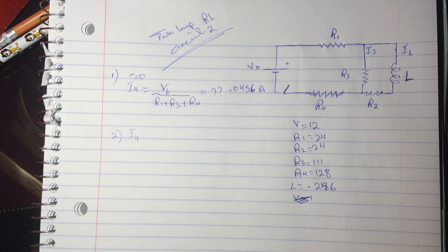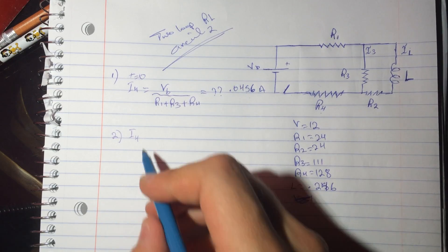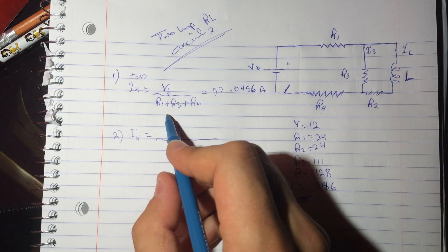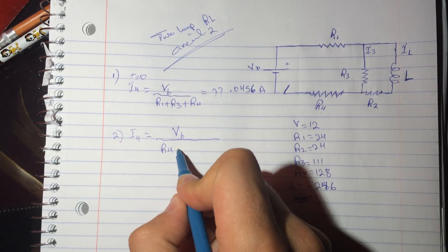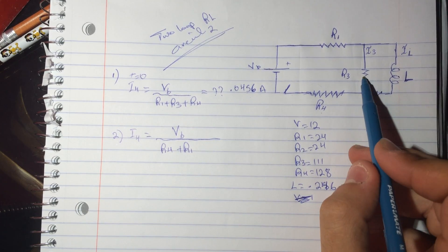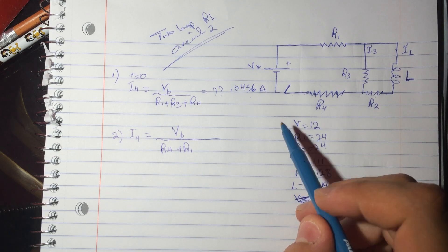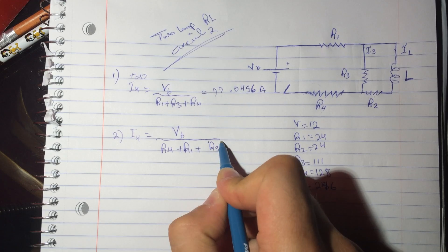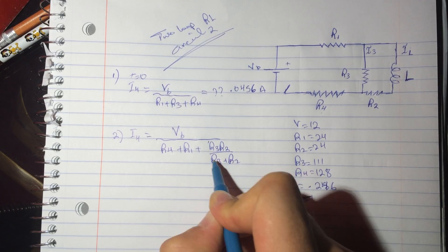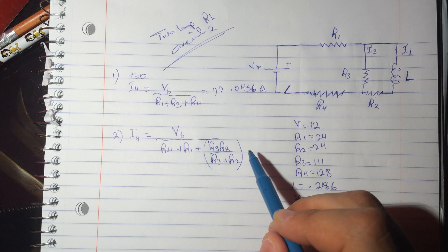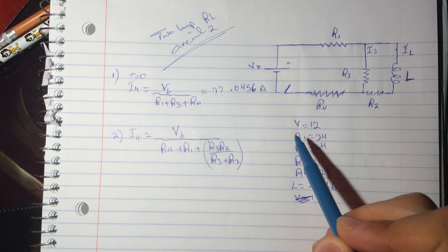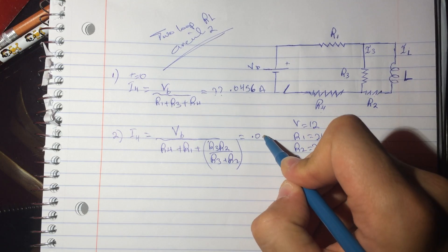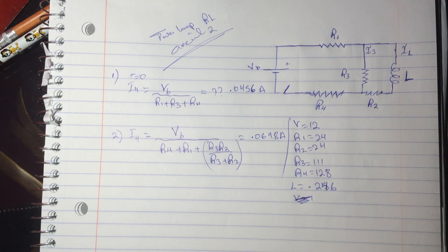At time equals infinity, the inductor acts like just a wire. The formula becomes VB divided by R4 plus R1 plus the parallel combination of R3 and R2, which is (R3×R2)/(R3+R2). My answer for this was 0.0698 amperes.